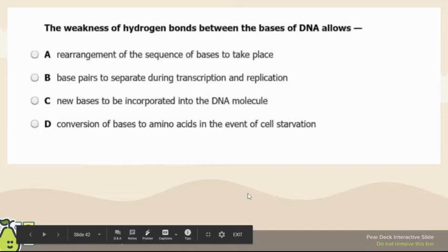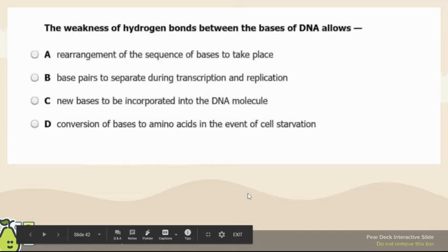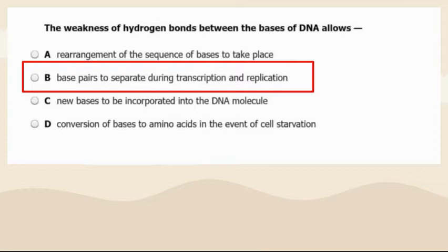The weak hydrogen bonds between the nitrogenous bases of DNA are what allows the base pairs to separate during transcription, translation, or replication. We want those bonds to be weak so they can separate.